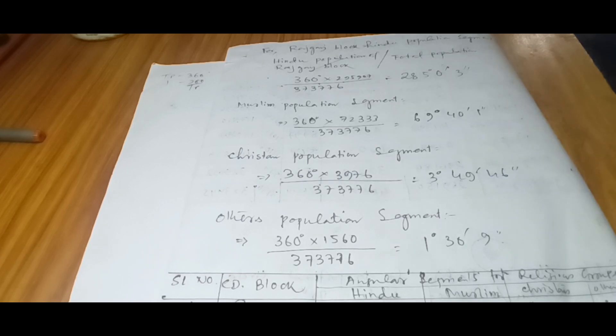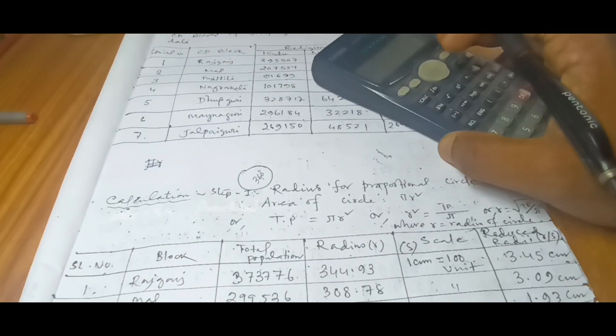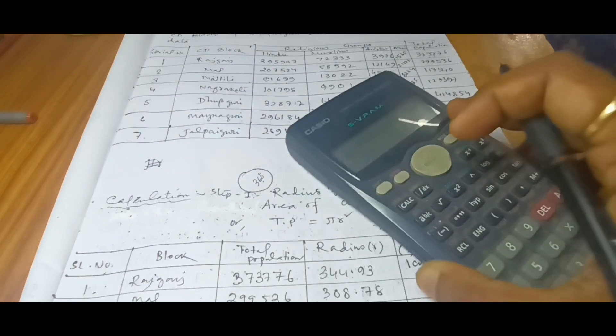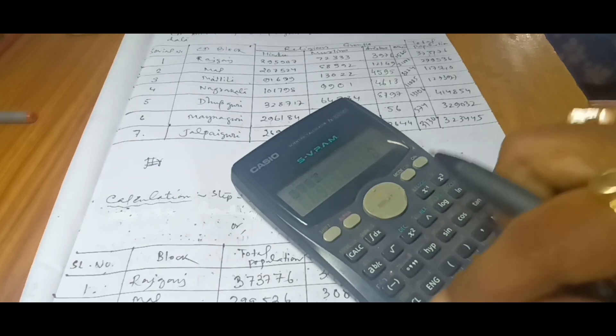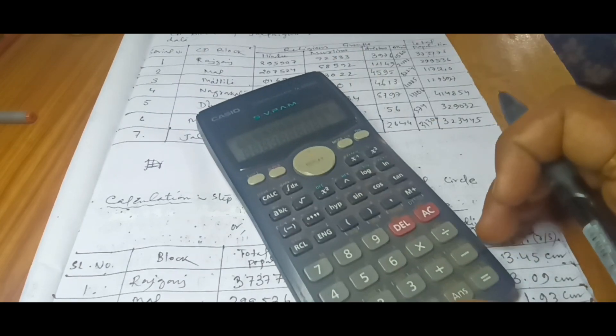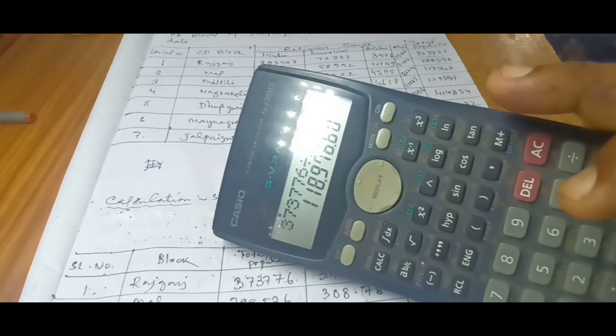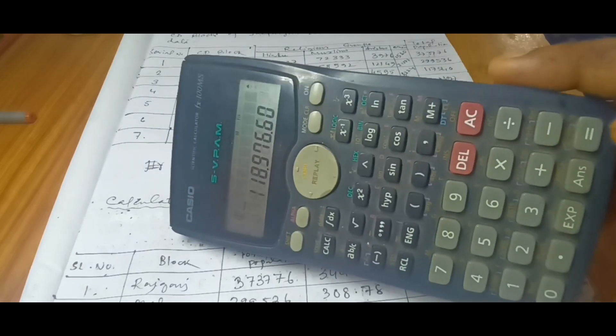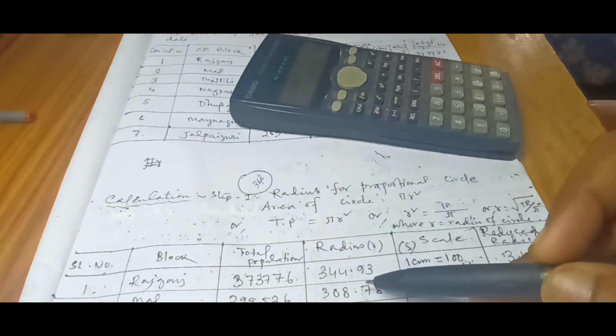Another important thing is how to write the formula in the calculator, because sometimes you get syntax error just because you have not put the formula in proper manner. Let me show you. The formula goes: r = √(total population / π). For Rajganj, the total population is 373,776 divided by—you'll get shift button, and shift, exp is π. After that press equal to, you will get a value. After that press the root sign and press equal to. You are getting value 344.93. This is the way you have to go.